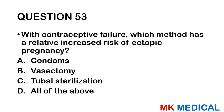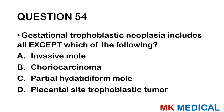Question fifty-three: With contraceptive failure, which method has a relative increased risk for ectopic pregnancy? A, condoms; B, vasectomy; C, tubal sterilization; D, all of the above. With tubal sterilization, there is most likely a risk of ectopic pregnancies. Vasectomies and condoms have no such risk. The answer is C.